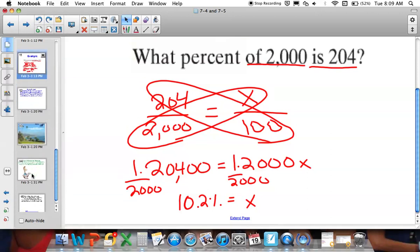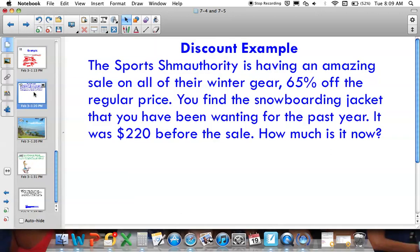Alright. We're going to do a couple examples of how to use percentages. Things that you'll think about in real life. Tip, discounts, markup, sales tax. So, let's talk about a discount example. Sports Authority is having an amazing sale in all of their winter gear. 65% off of the regular price. Which is great. Because Sports Authority never goes on sale. FYI. You find the snowboarding jacket that you've been wanting for the past year. It was $220 before the sale. How much is it now?